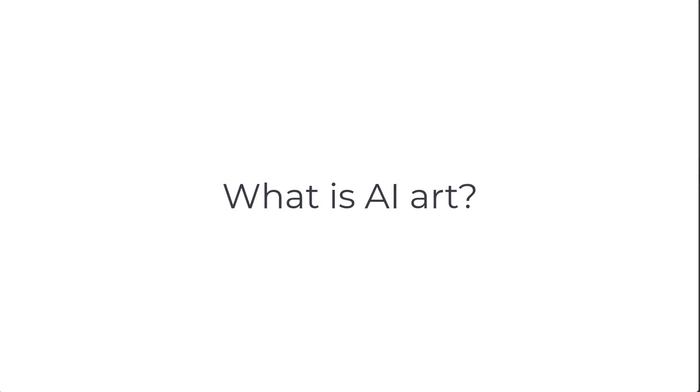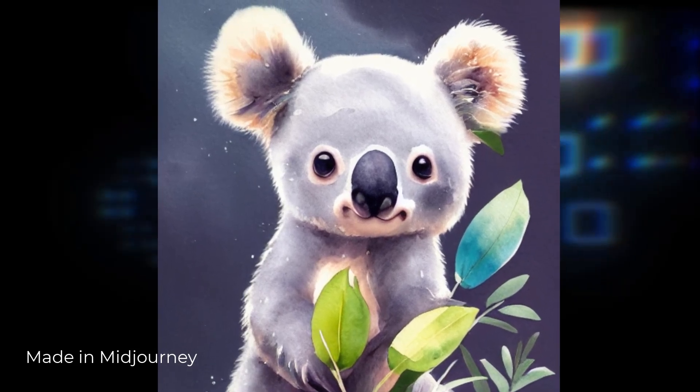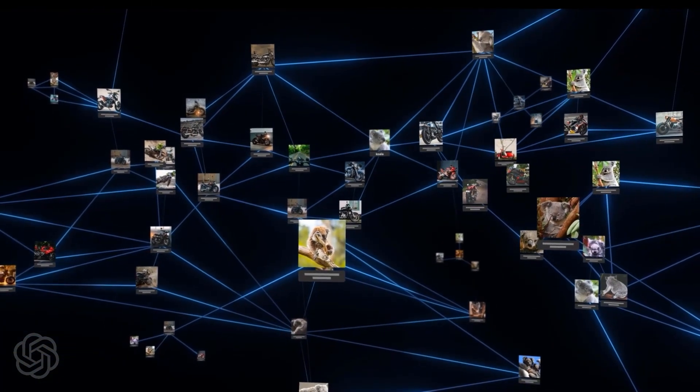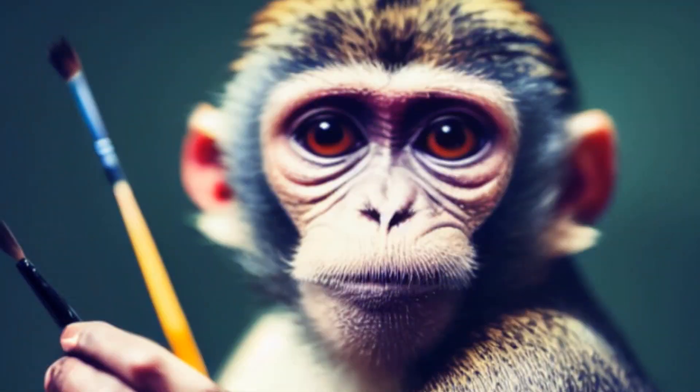The first question is: what is AI art? AI art is art that has been created with the assistance of artificial intelligence, and this artificial intelligence has been generated by a machine learning process. So let's say you want to see a monkey holding a paintbrush — the algorithm will now create you exactly that. Not only that, it will give you a few variations, and this all happens within a couple of seconds.